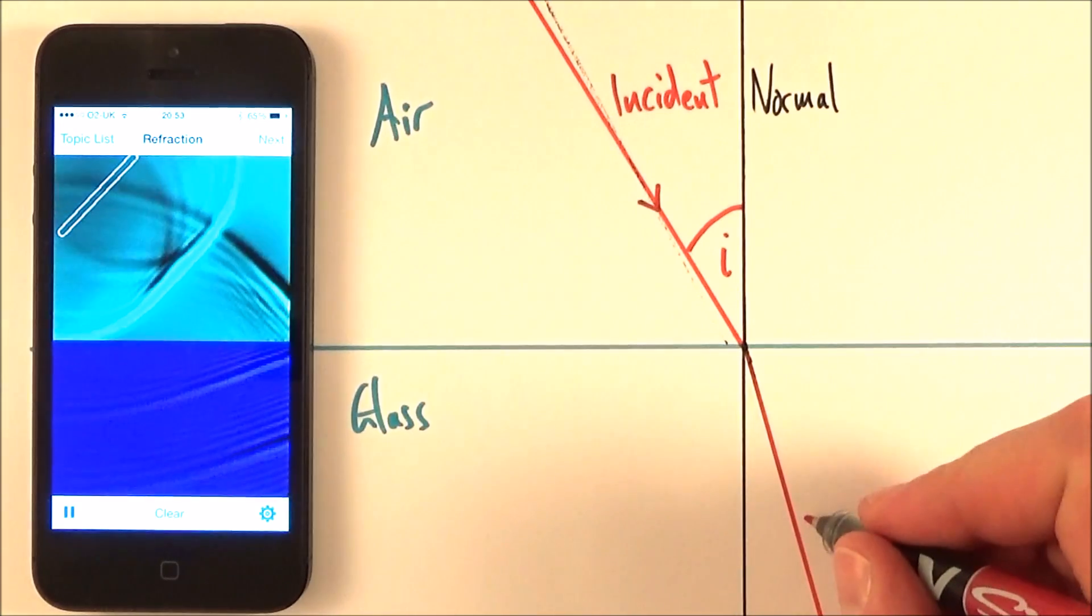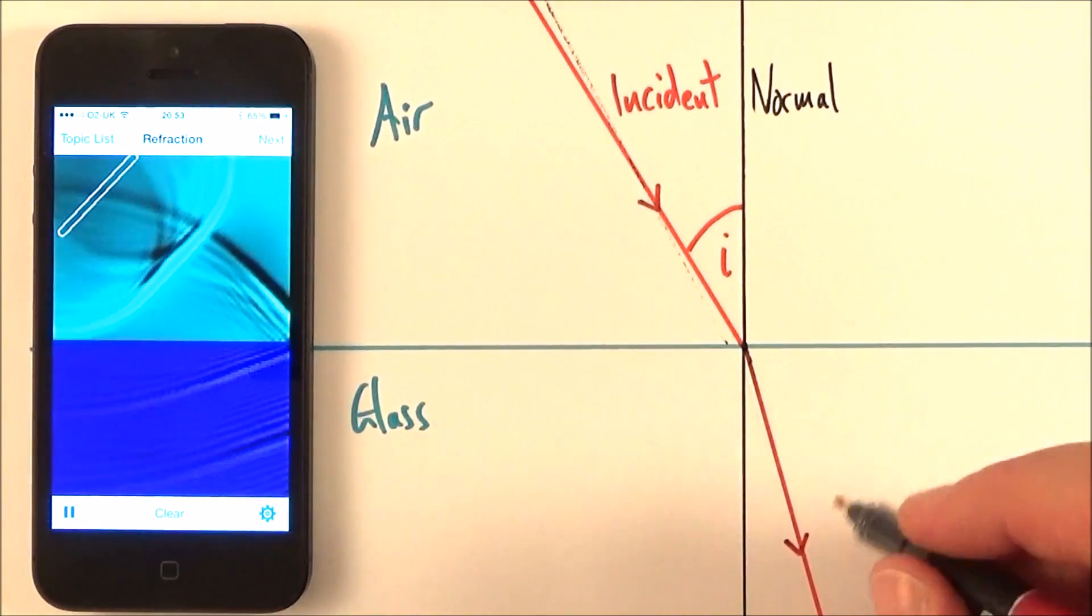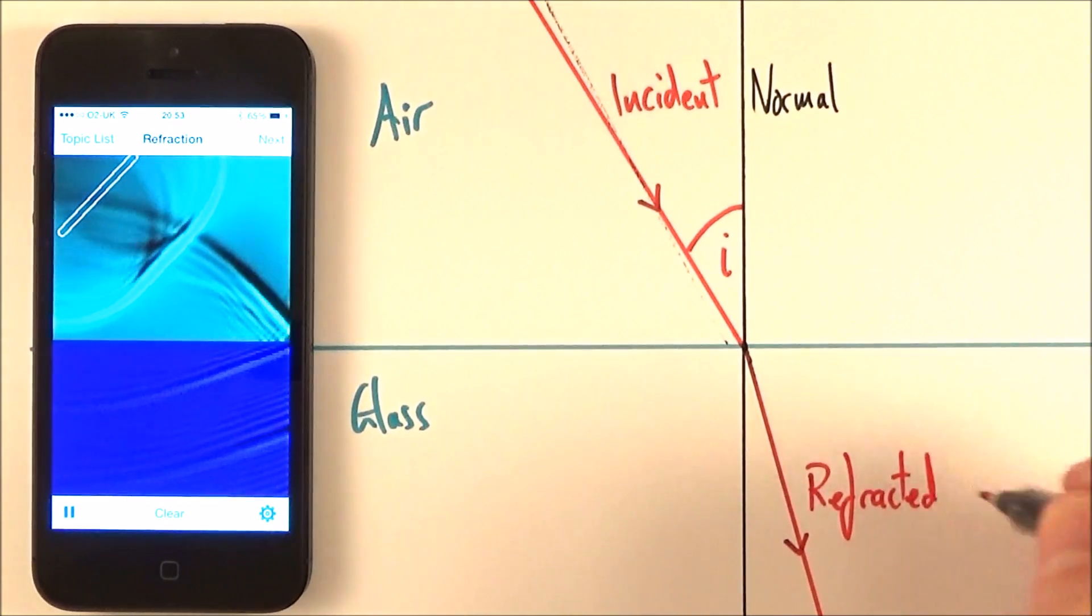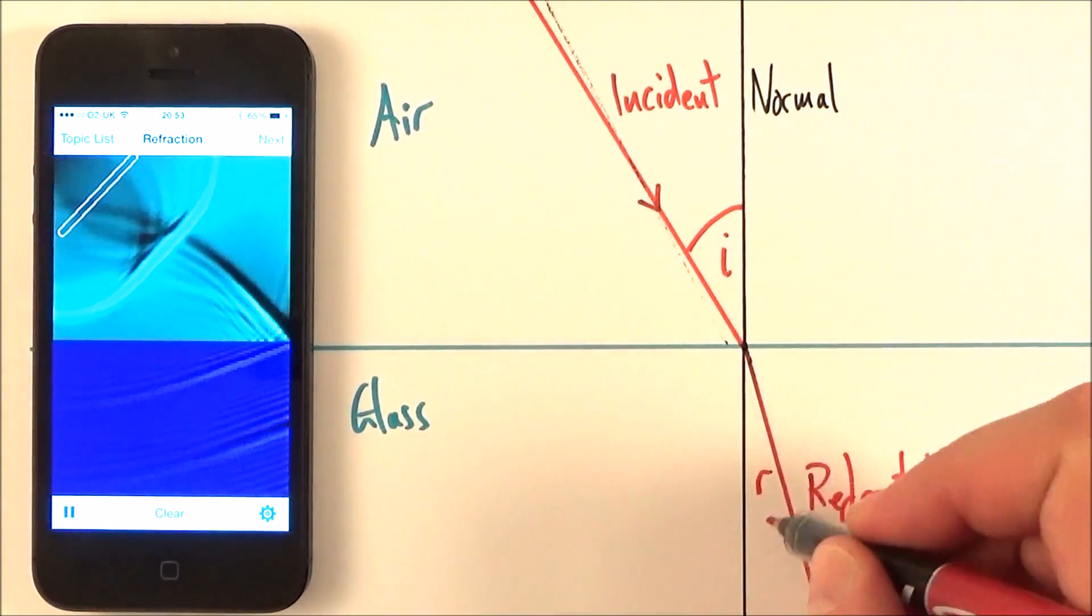So what we have now is something that's been refracted. And this ray, I'm just putting an arrow to show which way it's going, is what we call the refracted ray. And we also then have an angle of refraction, little r.